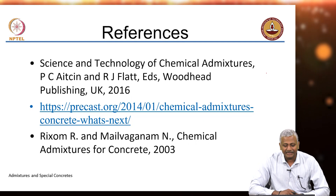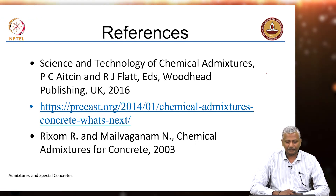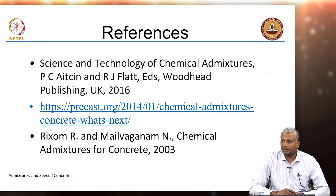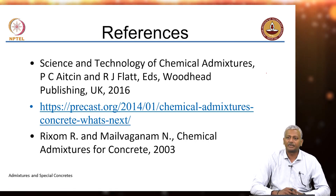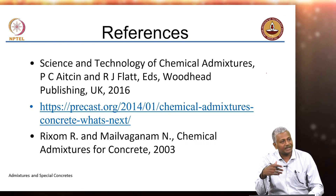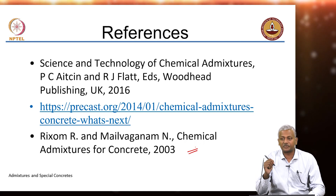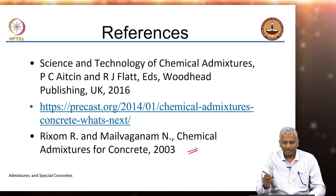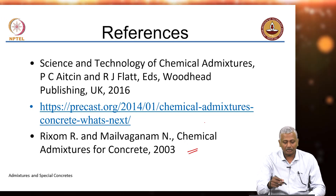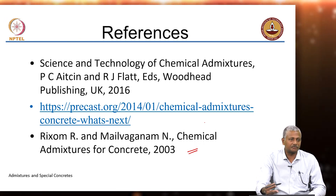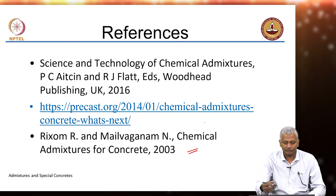We will end this first part on chemical admixtures with a few recommended resources: the book Science and Technology of Chemical Admixtures by Aïtcin and Flatt has a lot more detail about the structure of these polymers and how polymer structures lead to better effectiveness. There is also a more basic book on chemical admixtures by Ramachandran that is quite popular. The website precast.org also describes chemical admixtures in some degree of detail and may be quite useful to go through.